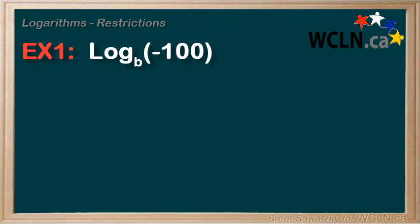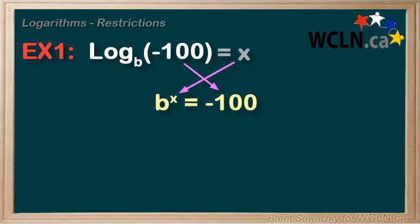So log of negative 100 and we get an error. So a base 10 won't work here. Well, let's consider other options. Let's put in an x and switch things around to exponent form to have a look. b to the x equals negative 100. So what base b would make this work?